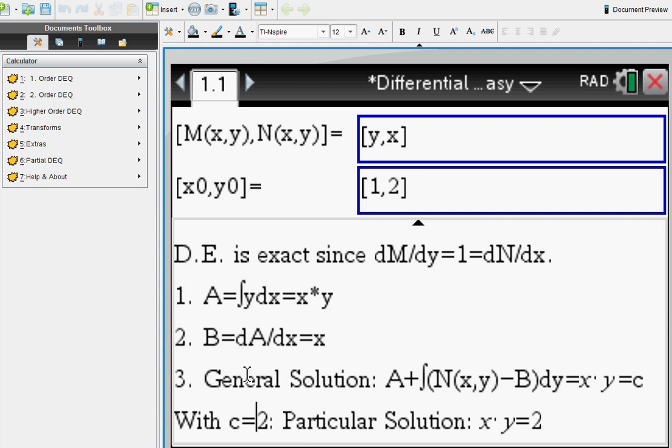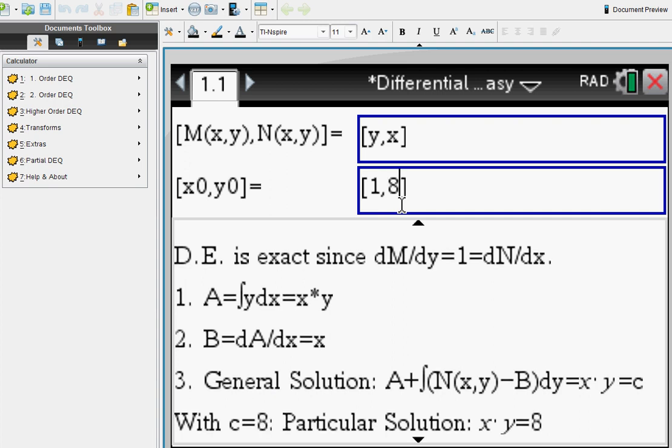Then you can see the steps here: 1, 2, and 3. The steps are performed here for you and we arrive at the general solution x times y equals c. Now again, using your initial condition, say we have (1,8), your particular solution turns out to be x times y equals 8.